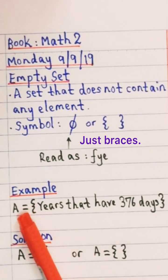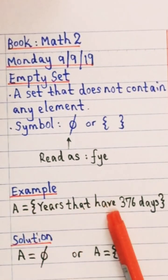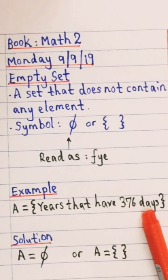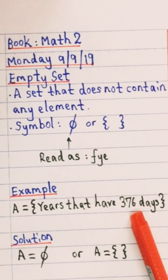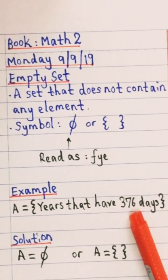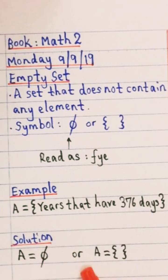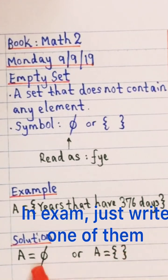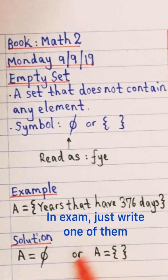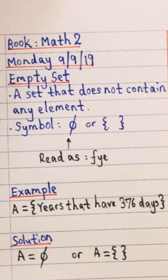Example would be if I define set A as years that have 376 days. So if you think carefully, there is no year that have 376 days. So it's gonna be A equals to Phi, or A will be braces without any element. So this is how we represent empty set. Another example would be like a week that have 8 days. There is no week that have 8 days. So you're gonna write that set will be equals to empty set.